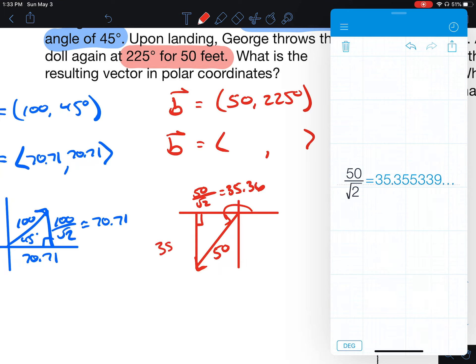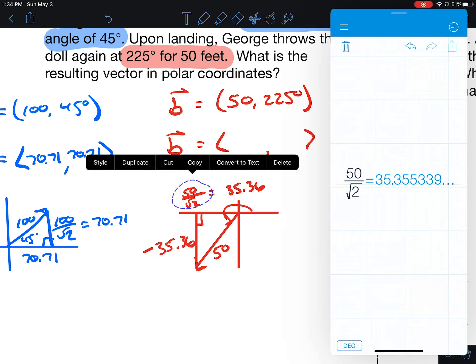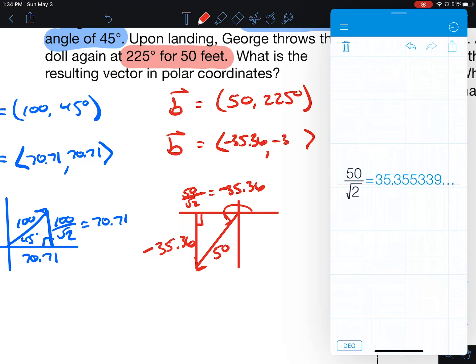You've got to be careful about what I just wrote. This is going down for y and left for x. So the components for this are negative 35.36 and negative 35.36.